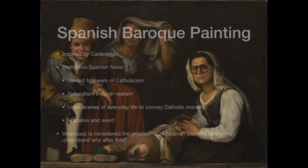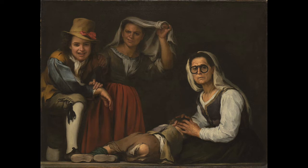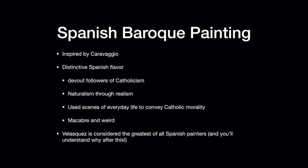They used scenes of everyday life to convey their Catholic morality. They were sort of the beginning of genre painting — showing normal people going about their normal lives, but with a moral underpinning. One reason they painted so many genre paintings is that people from the Netherlands were in Spain and buying them. When we get to the Netherlands, we'll talk about why paintings of everyday life were so popular there.